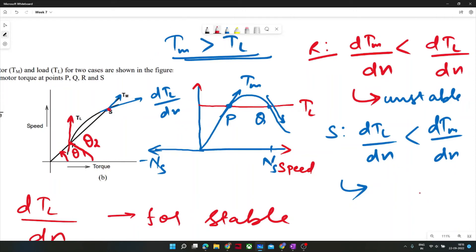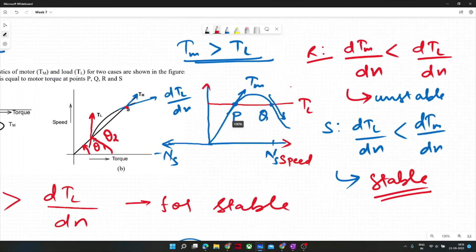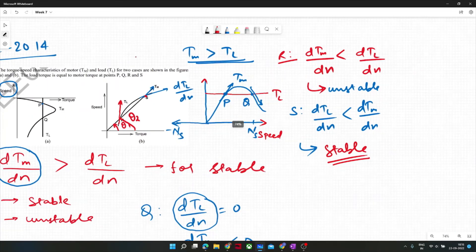So it would be stable at S. You just need to identify the slope between them, which is higher. If motor torque slope is higher than load torque slope at any point, that is considered stable.